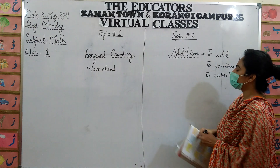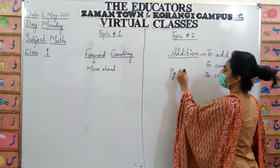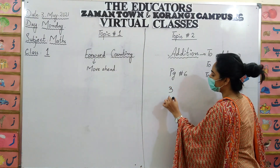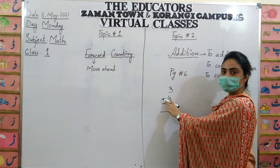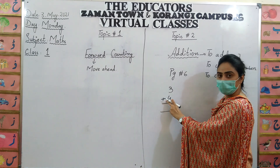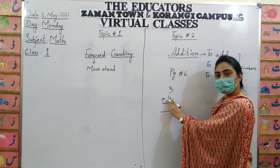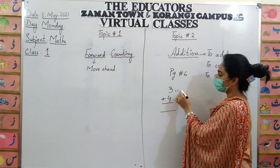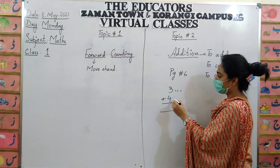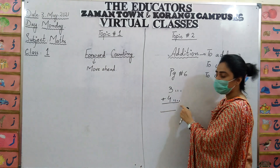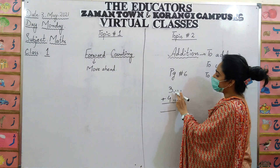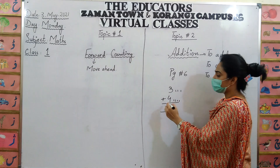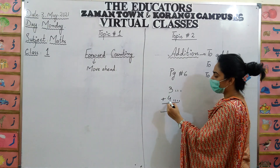Now we will solve page number six. Open page number six. It's all about simple addition. Like, three plus four. What is this sign? This is the sign of addition. Wherever you will see this sign, it means we are talking about addition. How we will solve this question? Draw three lines with me: one, two, three. And how many lines will we draw here? Four: one, two, three, four. Now count: one, two, three, four, five, six, seven. Answer is seven. Three plus four is seven.